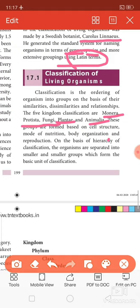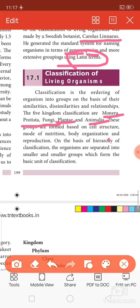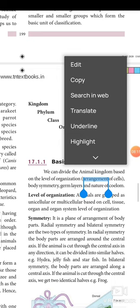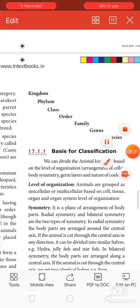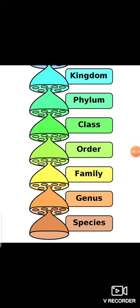The hierarchy of category is: Kingdom, Phylum, Class, Order, Family, Genus, and Species. We should not change this hierarchy — Kingdom, then Phylum, then Class, then Order, then Family, then Genus, then Species. Sometimes we may get confused with this order.